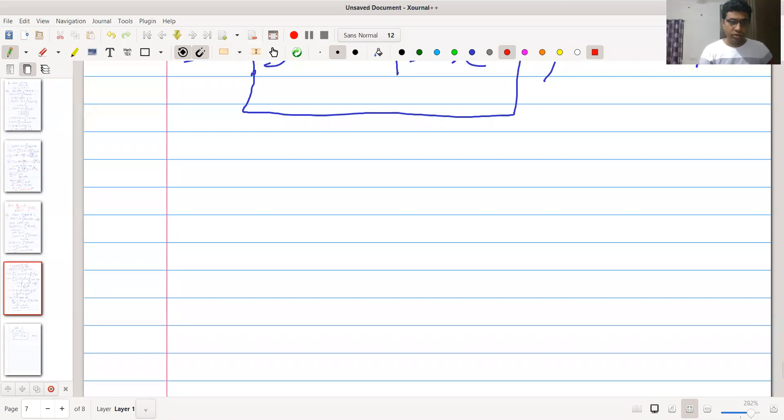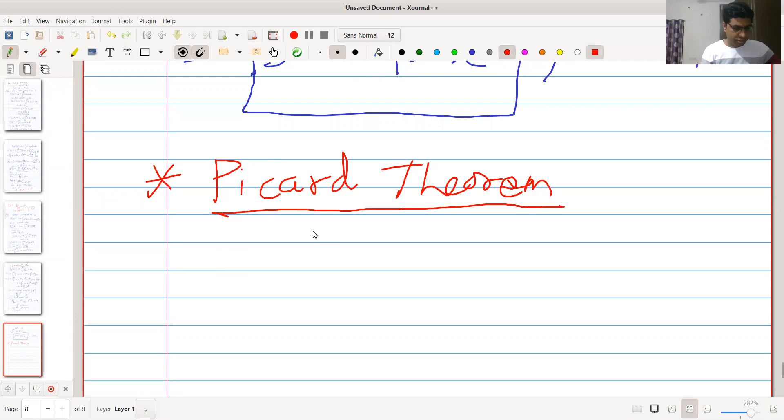In this lecture we discuss Picard theorem. So first thing is a rectangle. So what is meant by rectangle?